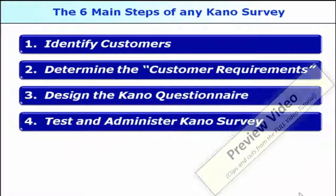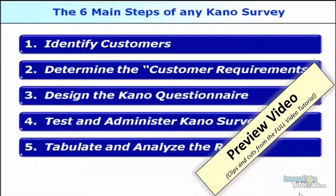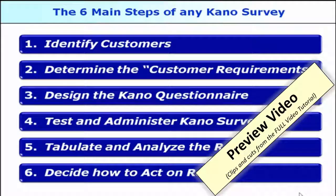Step four is to test and administer the Kano survey. Step five is to tabulate and analyze the results. And step six is to decide how to act on the results.